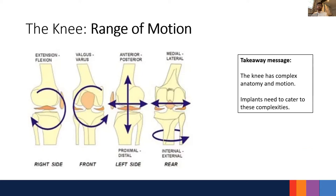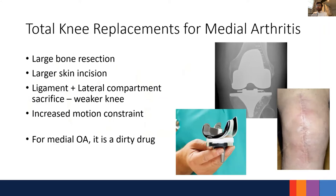The knee is complex and the implant needs to cater to this — right now there seems to be a gap. Our lab focuses on what we call one-sided or medial arthritis. One-sided arthritis can be either medial (inside) or lateral (outside), but in most cases it is on the inside half.